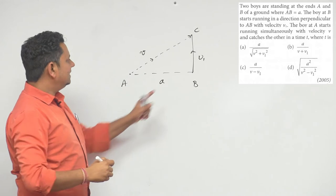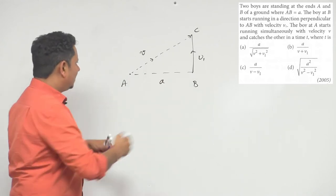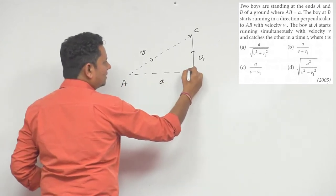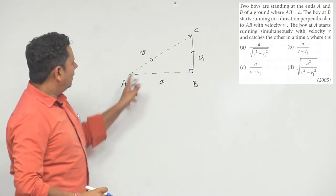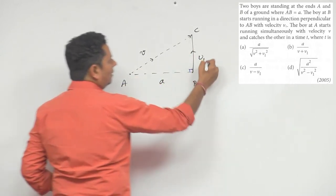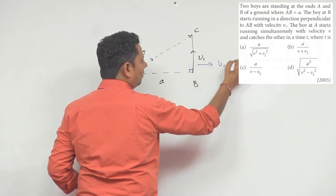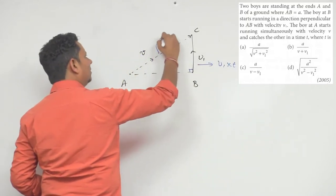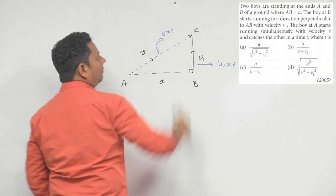In this case we can say the distance A. Now this is going to be a right angle triangle. Distance between A and B is A. This distance BC will be equal to V1 multiplied by T, and this distance will be equal to V multiplied by T.